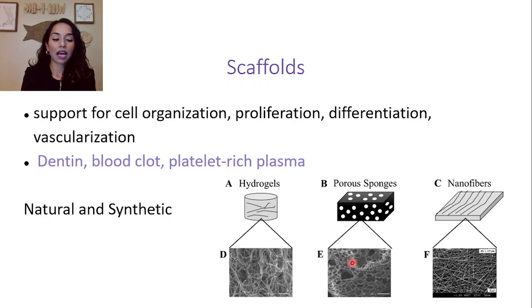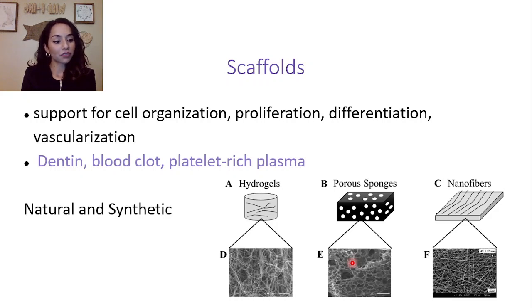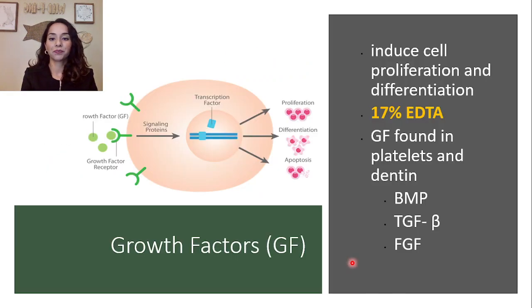Some natural scaffolds include collagen, hyaluronic acid, and chitin. Some synthetic scaffolds include hydroxyapatite, nanofibers, and fibrin gels, to name a few.